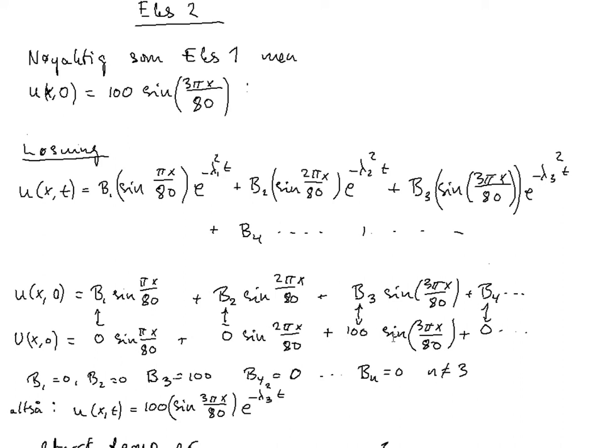So we just write out the initial temperature as what it is, 100 sin 3 pi x over 80 and add zero terms in order to see that b1, b2, b4, b5 and so on are equal to 0. But the third coefficient b3 is not 0, it's equal to 100.